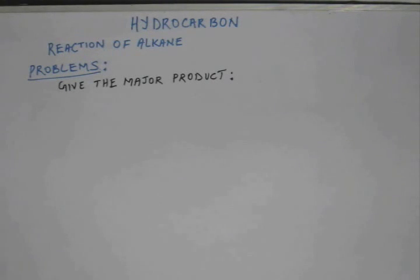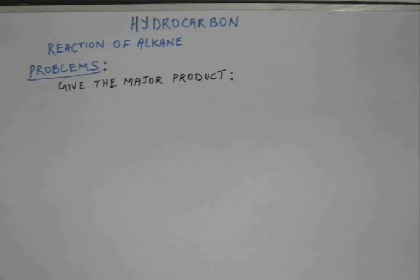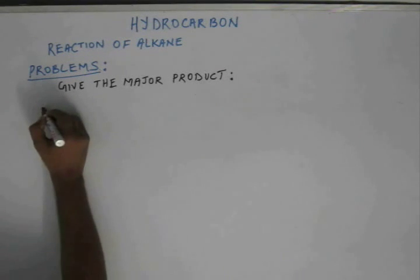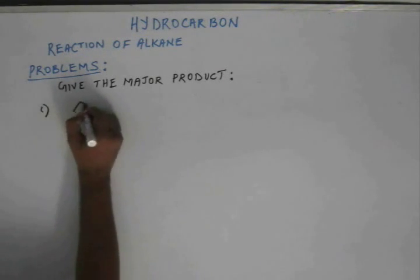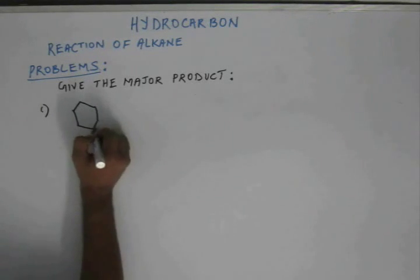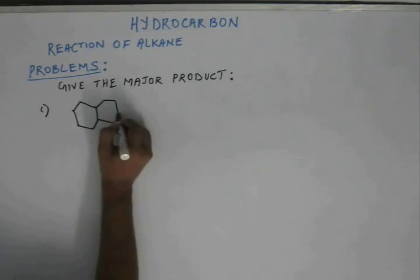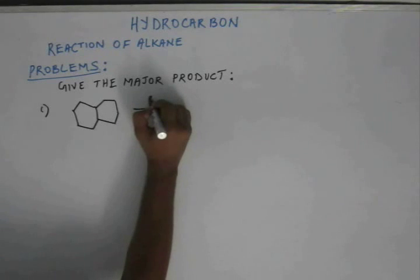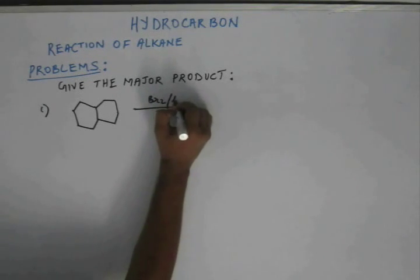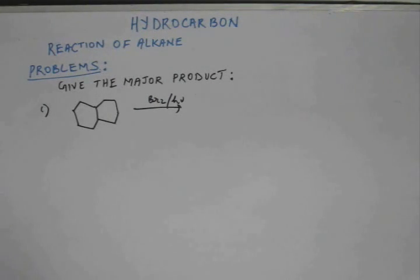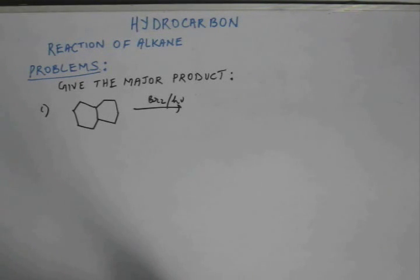Before we move on to alkynes, let's solve some problems on the reactions of alkenes. The question is: give the major product for the following reaction. In this bicyclo compound, suppose we add bromine in presence of light and we are asked to give the major product.